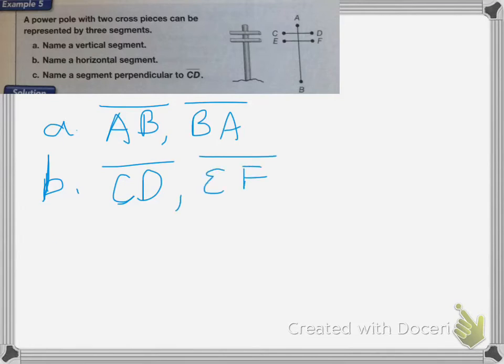And then C, name a segment perpendicular to CD. So here's CD. So the line that is perpendicular to it is going to be line AB. Because it meets at a 90 degree angle. So it's going to be segment AB. That's it for this lesson.